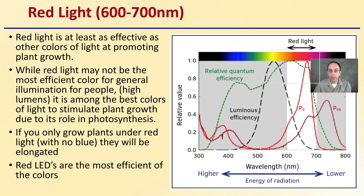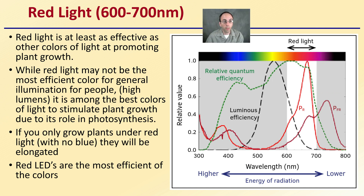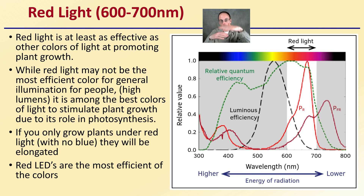First off, let's define red light, which you might be more familiar with. Red light is at least as effective as other colors of light at promoting plant growth. While red light may not be the most efficient color for general illumination for people, it is among the best colors of light to stimulate plant growth due to its role in photosynthesis. If you only grow plants under red light with no blue light, they will be elongated with stretched internode spacing. Red LEDs are the most efficient of the colors, and that's why you typically see them integrated into those particular light sources.